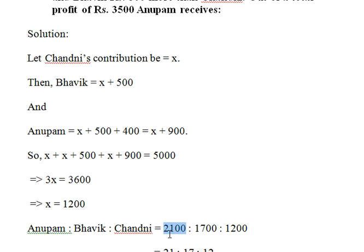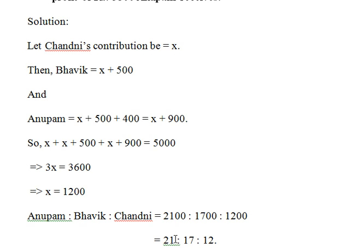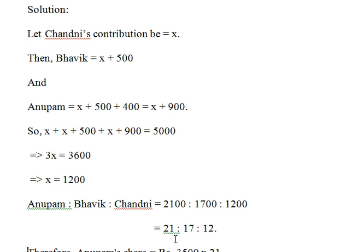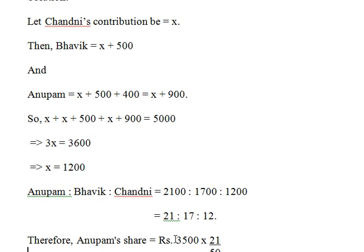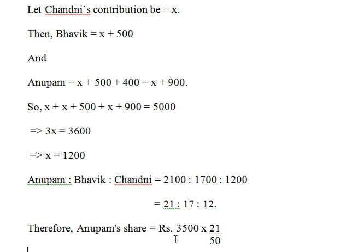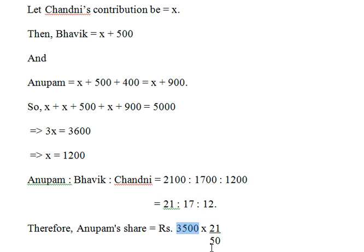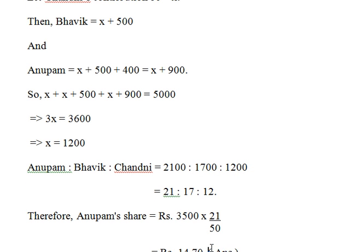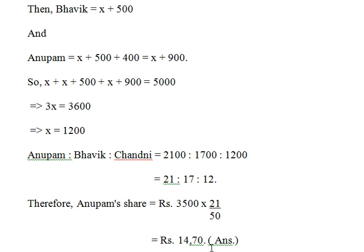We get the ratio 21:17:12 for Anupam, Bhavik, and Chandni respectively. Anupam's share would be 3500 multiplied by 21 divided by 50 (the sum of 21 + 17 + 12), so we get 1470 as the answer.